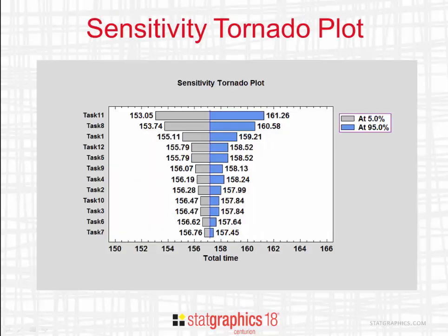In this tornado plot, you can see that the most influential tasks affecting total time are task 11, task 8, and task 1. If you look at task 11, when it's at its 5th percentile, the project takes only 153 days. When it's at its 95th percentile, the project takes 161 days. While this is a fairly simple example and you might have been able to determine which input variables were most important without the tornado plot, the tornado plot is very useful for more complicated models.